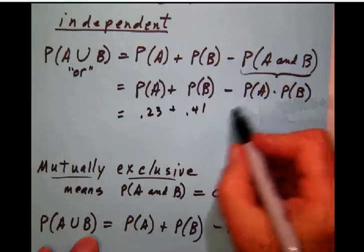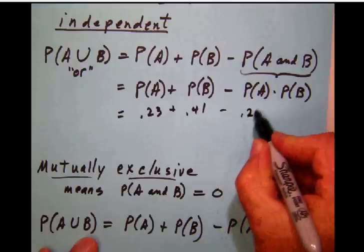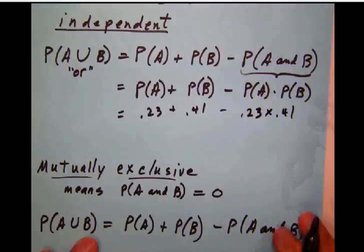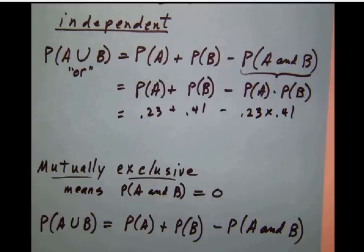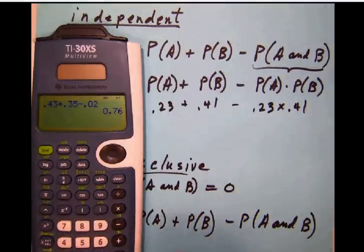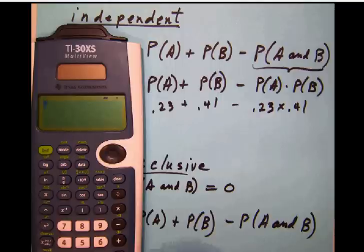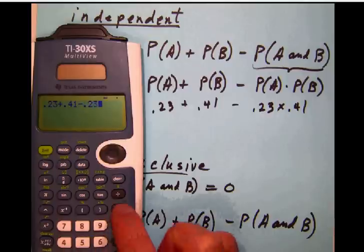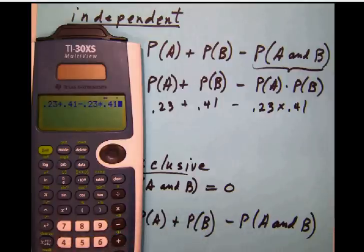In this case, we're simply going to multiply 0.23 times 0.41. This just lends itself well to working with the calculator, because the calculator is going to keep the order of operations straight. So all we have to do is simply enter this problem exactly as it's written. So we'll go 0.23 plus 0.41 minus 0.23 times 0.41. Even though that multiplication is at the end, ALEKS or the regular TI-30 calculator knows that we have to multiply before we can add or subtract. The answer is 0.5457.